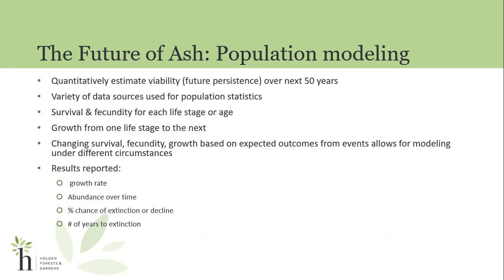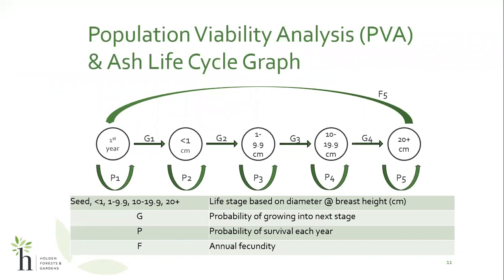When you do population modeling, you can assess what's currently happening in that particular population and assume nothing will change over time. But I also wanted to change the survival, fecundity, and growth estimates based on expected outcomes from particular events that might occur over the next 50 years. That allows you to model under different circumstances, though you have to understand we're assuming these rates will change based on certain expectations. What we get out of population modeling is understanding what kind of growth rate a population has, what its abundance on average could be over time, and the percent chance of that population going extinct or having a severe decline. With our ash tree population in northwest Ohio, I broke down the life cycle of ash.